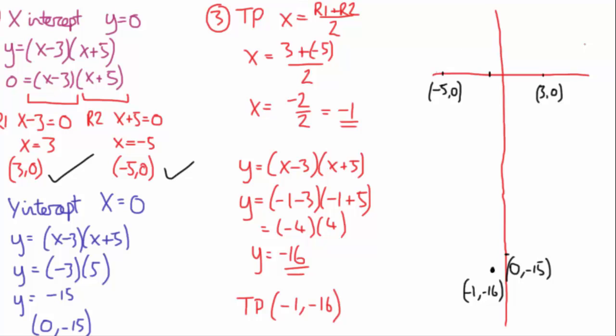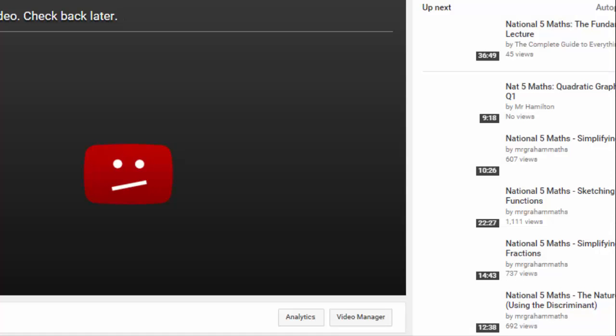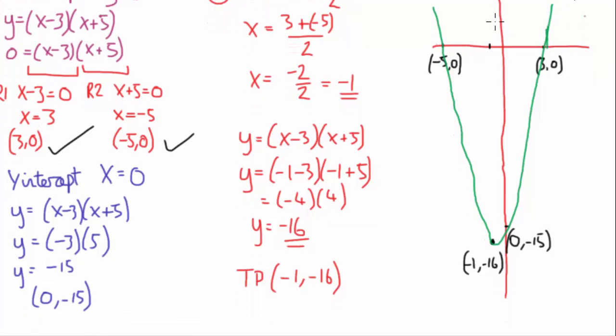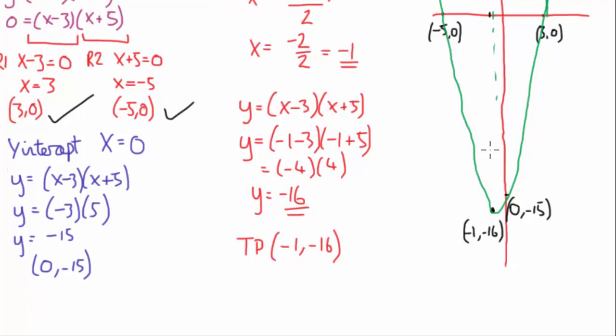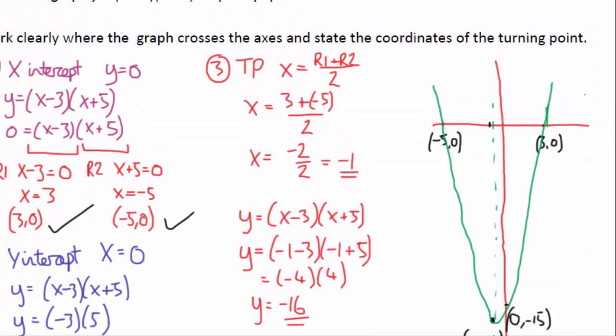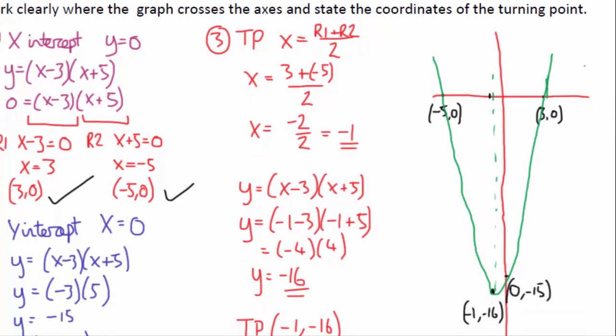And now, to try and draw this. Now it goes down here, then crosses here, and then it goes all the way back up. And that's where it's, in theory, where it's symmetrical. But that's essentially the answer to that question.